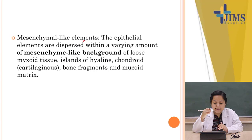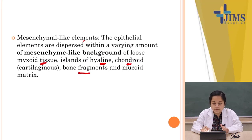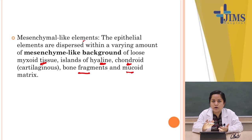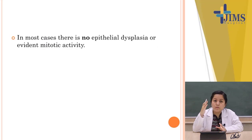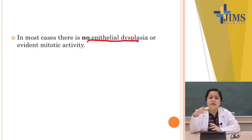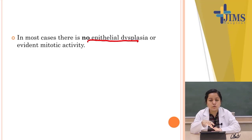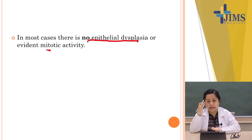The mesenchymal element can appear as mucoid tissue, hyaline tissue, chondroid (cartilage-like) tissue, bone fragments, or myxoid matrix. Importantly, there is no epithelial dysplasia — unlike carcinoma, the cells look normal with no atypical or aggressive features — and mitotic activity is minimal.